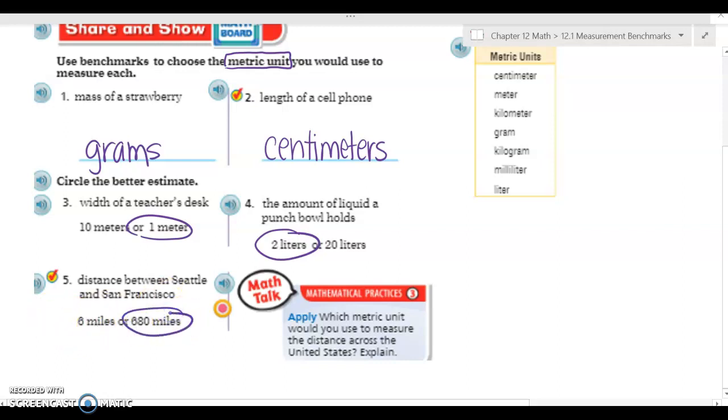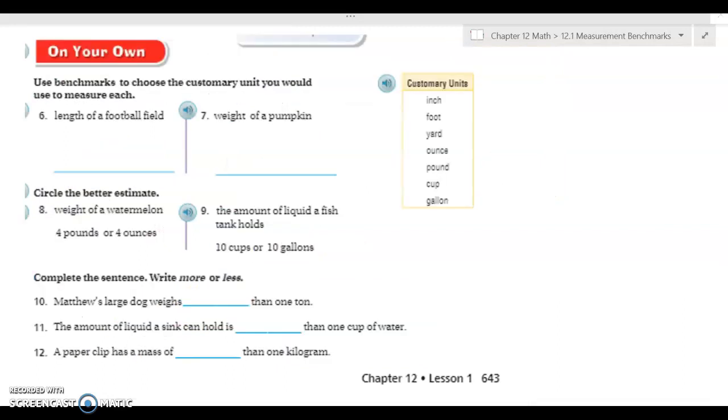Okay, we're on our On Your Own section. I'd like you to please go ahead and do six through twelve. So make sure you read the directions. The first section is use benchmarks to choose the customary unit you would use to measure each. The customary units are off here to the side. The next one, eight and nine, circle the better estimate. And then last but not least, complete the sentence with more or less. So go ahead and pause the video, complete six through twelve, and then come back to check your answers.